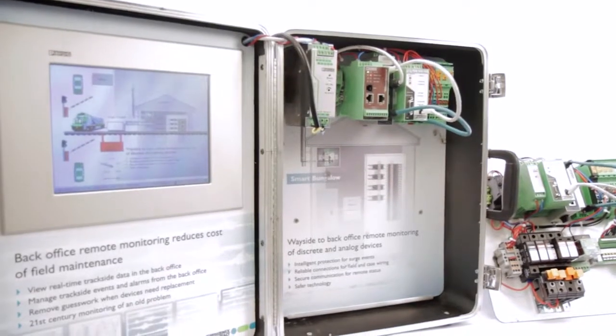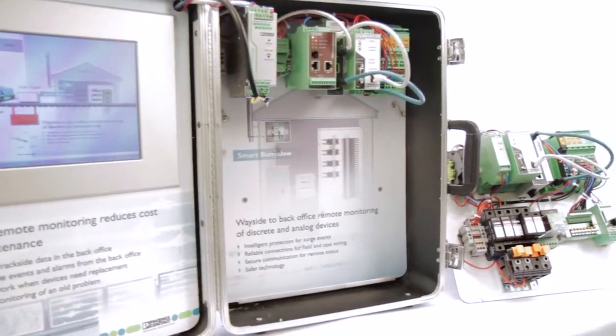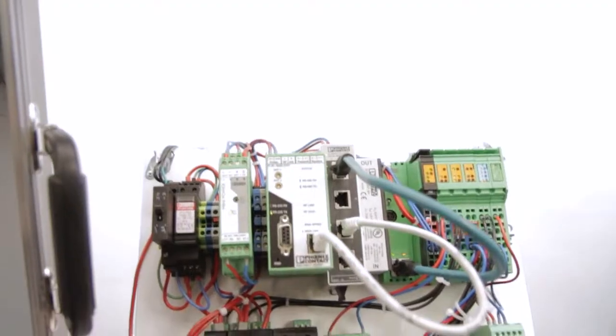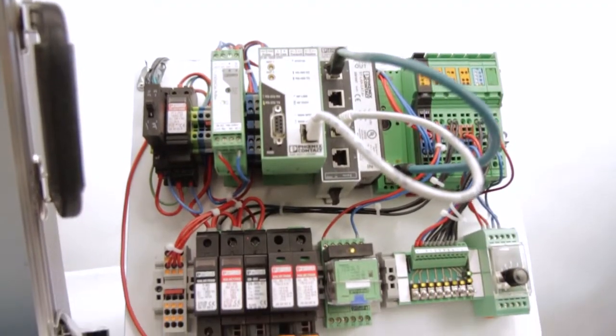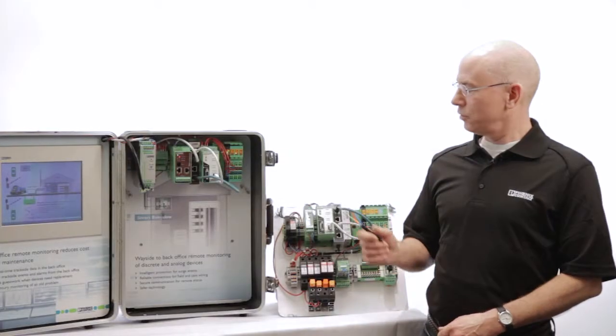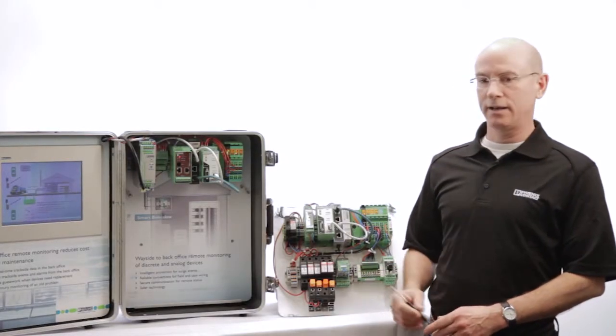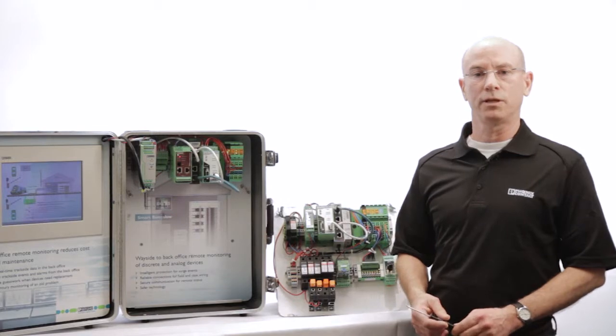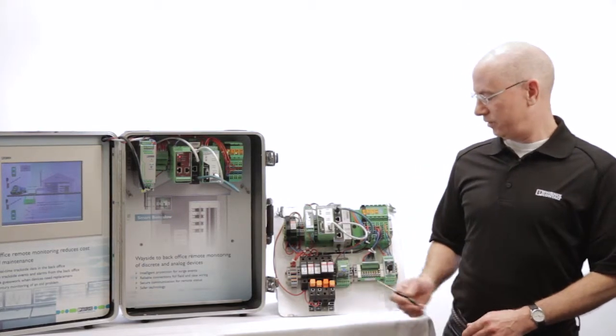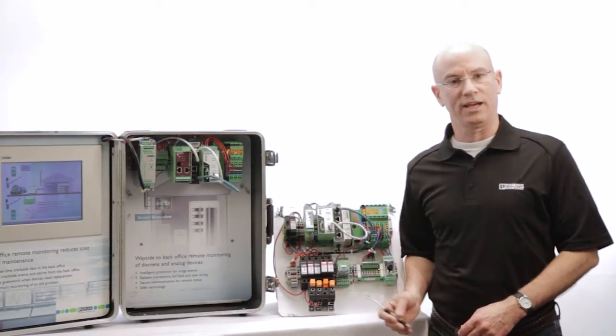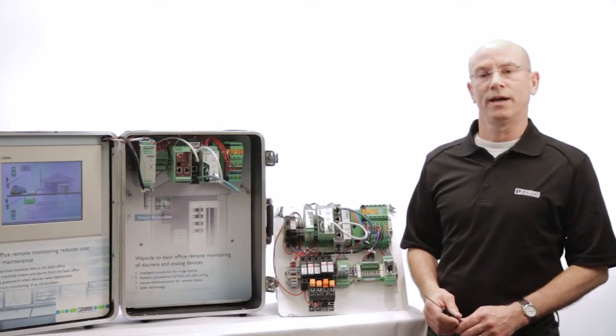Today we're going to talk about this sample case that is used to illustrate field communications of analog and digital inputs to the back office. In particular, we have here, we've simulated a smart bungalow, a railroad bungalow, with some of the devices for surge protection that will communicate to the back office.